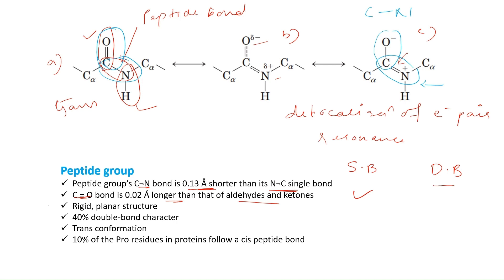The structure is rigid and planar, with about 40% double bond character. It adopts a trans conformation because the oxygen and the hydrogen attached to nitrogen are in opposite directions. However, about 10% of proline residues follow a cis-peptide bond, meaning the C=O and N–H are on the same side.